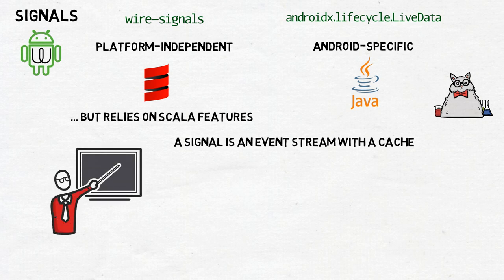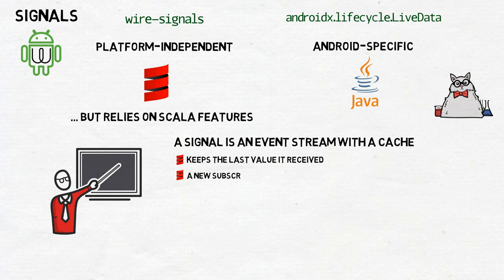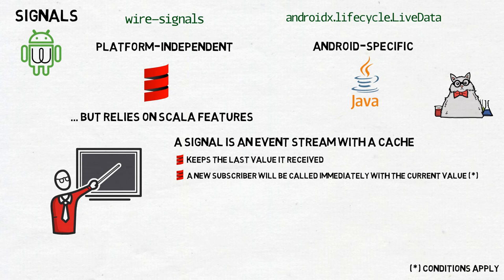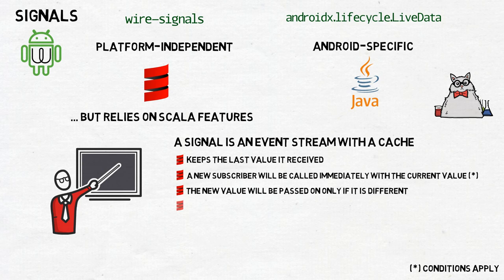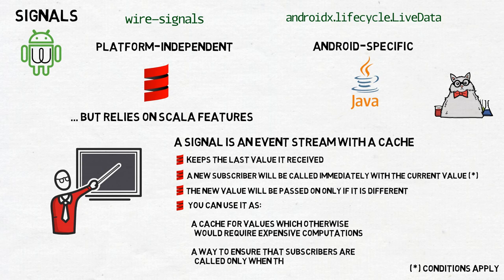So, what is a signal? In short, a signal is an event stream with a cache. It's a very simple, small distinction, but also a very powerful one. Whereas an event stream holds no internal state except for the collection of subscribers, and just passes on events it receives, a signal keeps the last value it received. A new subscriber function registered in an event stream will be called only when a new event is published. A new subscriber function registered in a signal will be called immediately — or as soon as possible in the given execution context — with the current value of the signal, unless the signal is not yet initialized, and then again when the value changes. A signal is also able to compare a new value with the old one; the new value is passed on only if it is different.